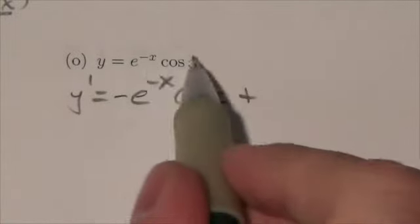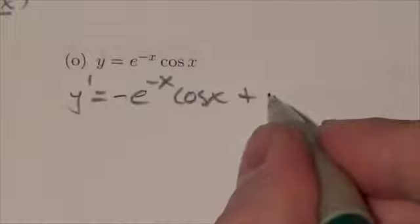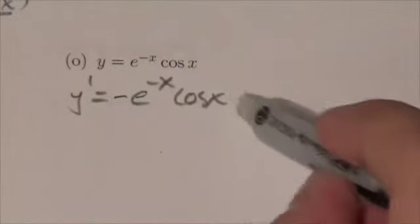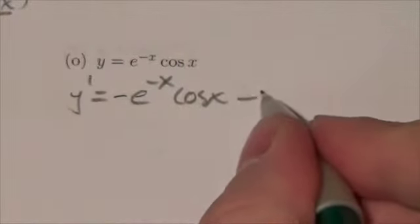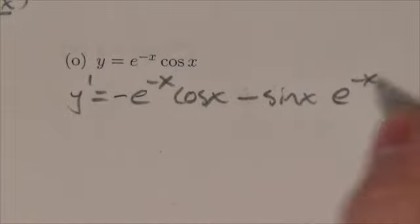And I'm going to add to that the derivative of the cosine of x, which will be negative sine. So I'm actually going to drop that plus, make that negative sine of x times e to the negative x.